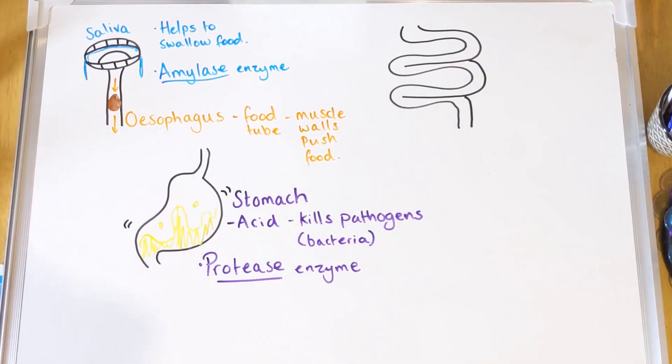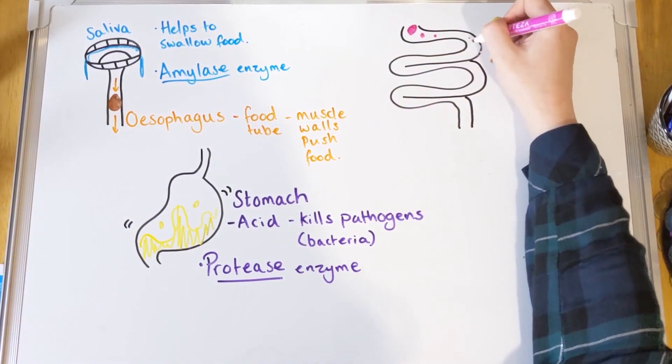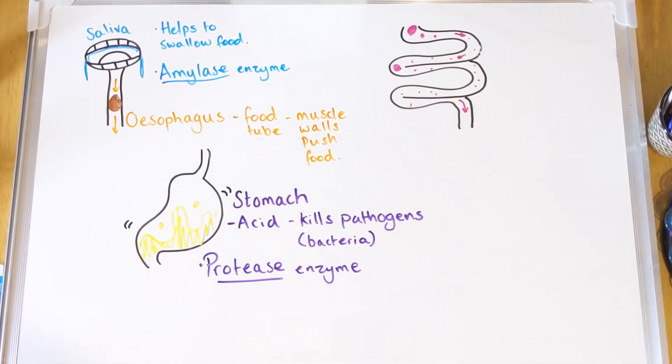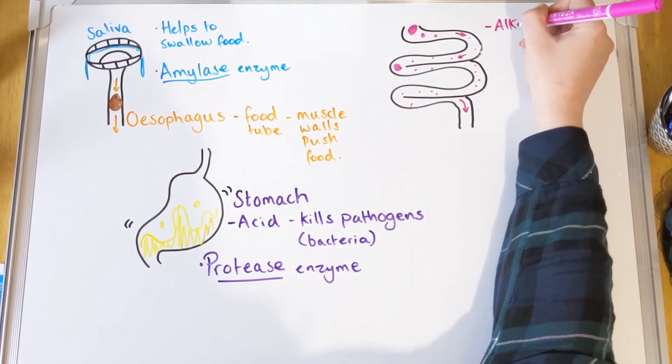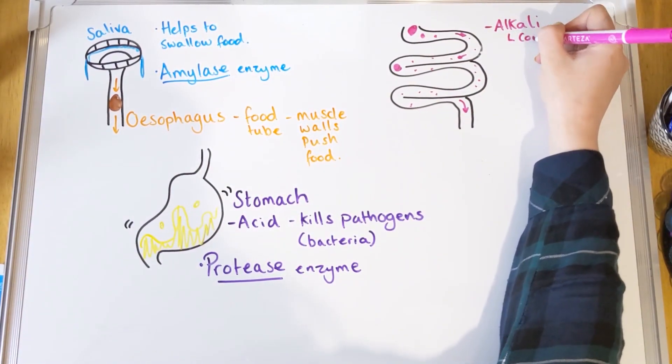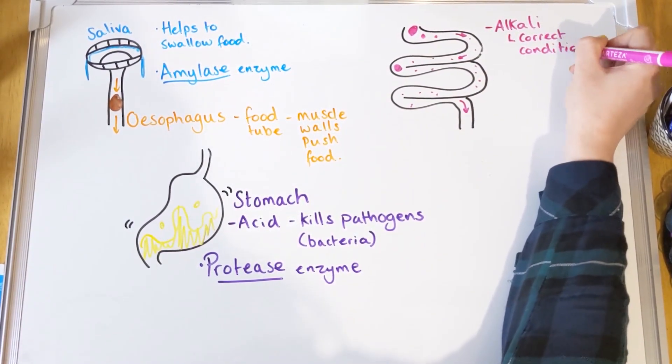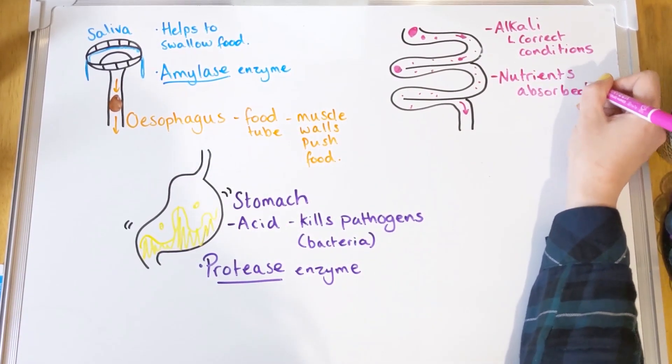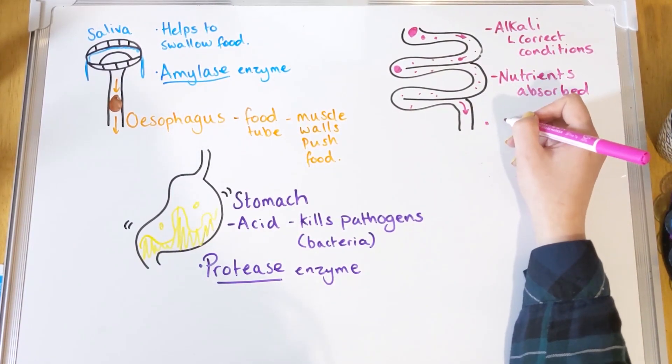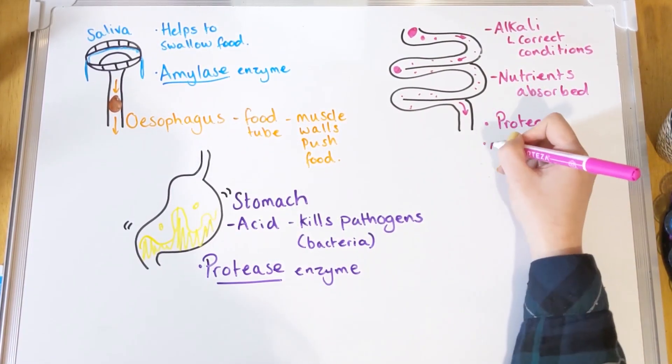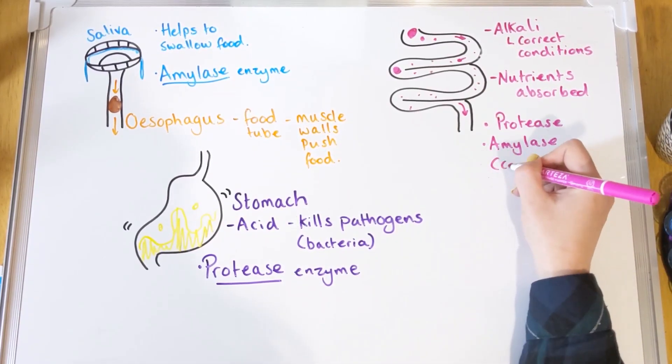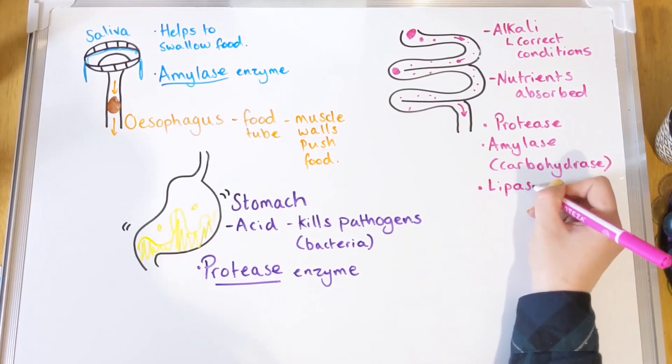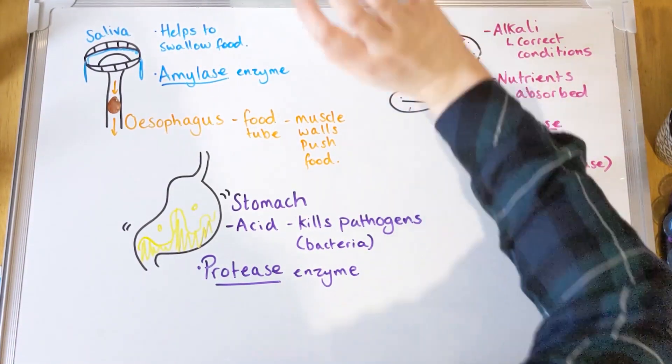After your stomach - so your food stays in there, you know, about four to six hours depending on what you've eaten - it will get deposited into your small intestine. Your small intestine has an alkaline condition, so the opposite to your stomach, and this is made using something called bile, which we'll talk about in a little minute. Alkaline conditions are what the enzymes in the small intestine need. So you've got three enzymes here: you've got protease that breaks down protein, you've got amylase or carbohydrases that break down carbohydrates, and you've got lipase, a new one. Lipase breaks down lipid, which is a posh term for fat, into something called fatty acid and glycerol.